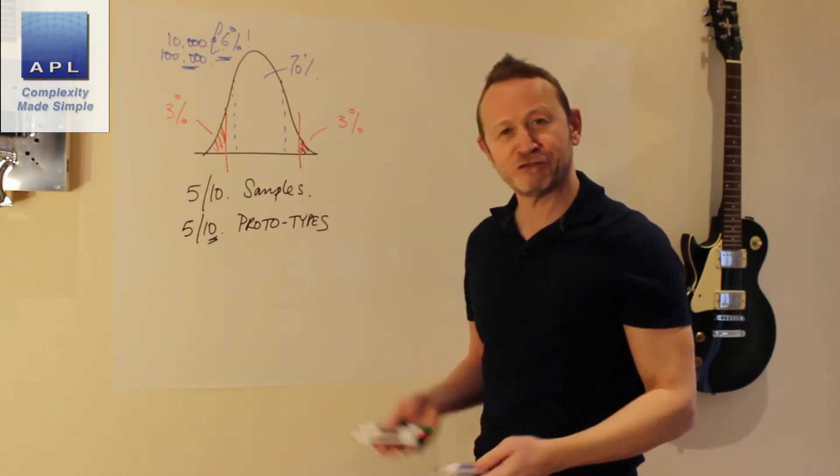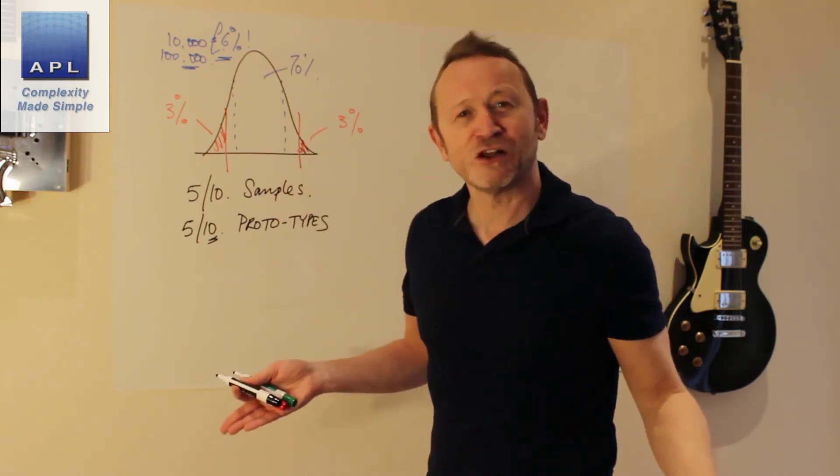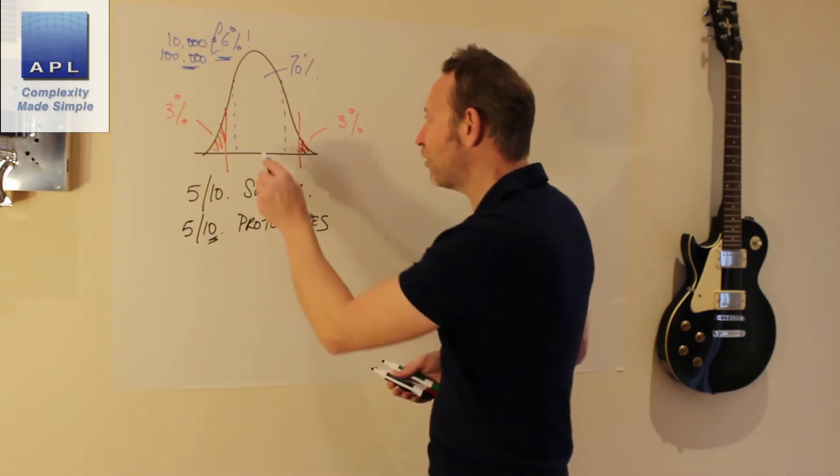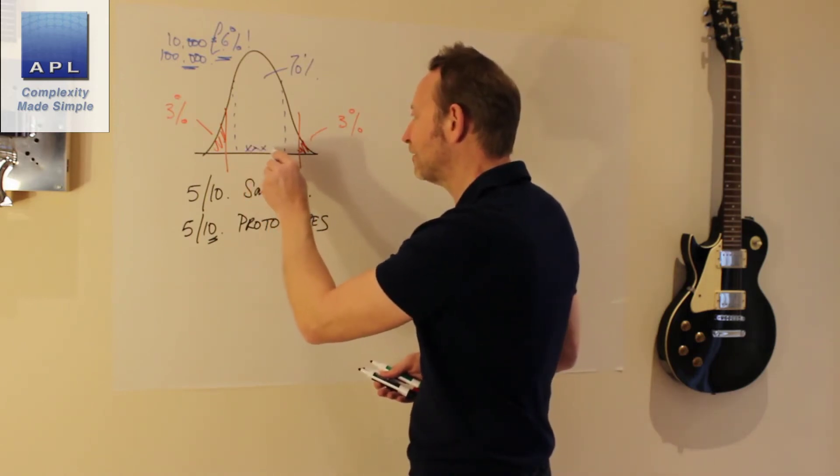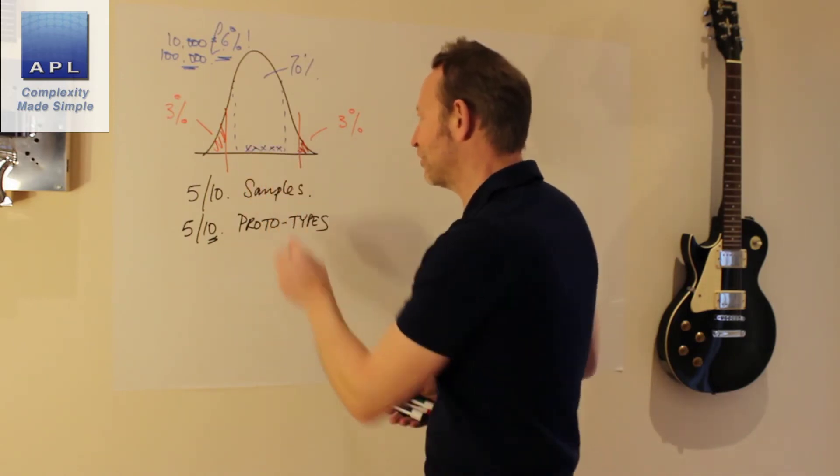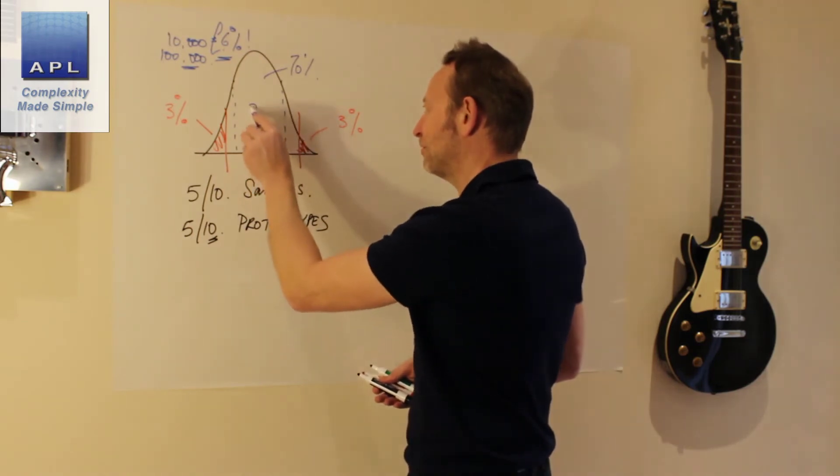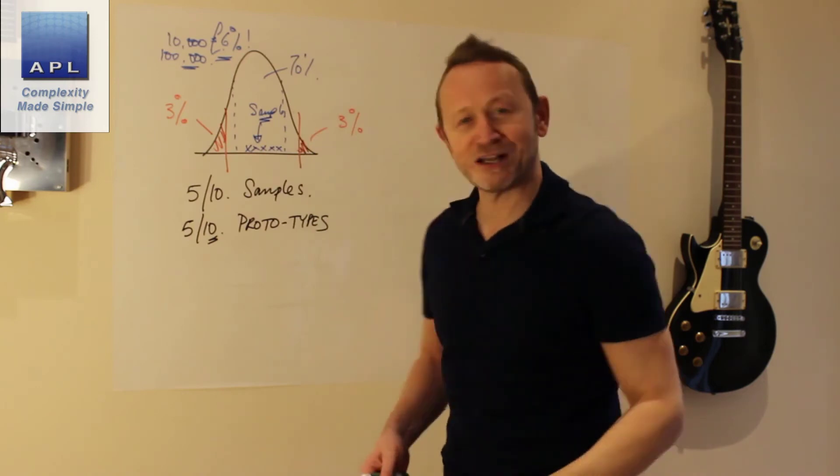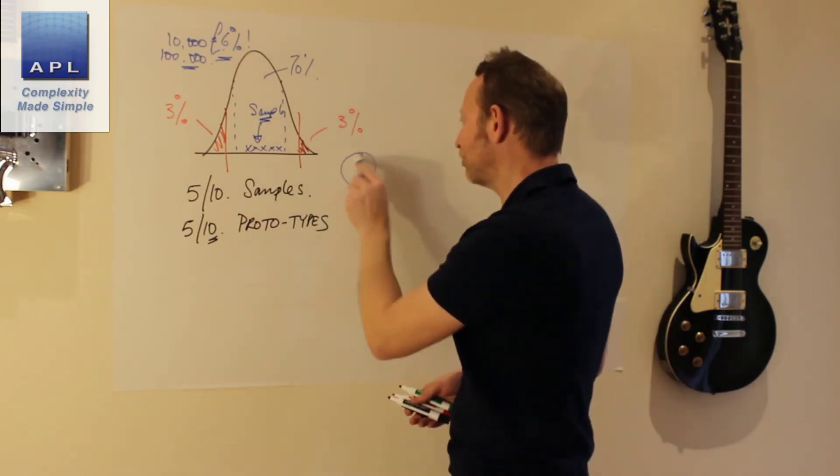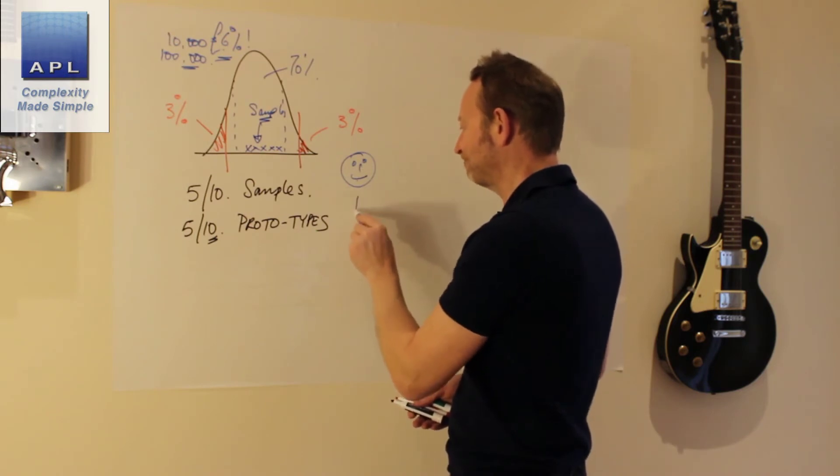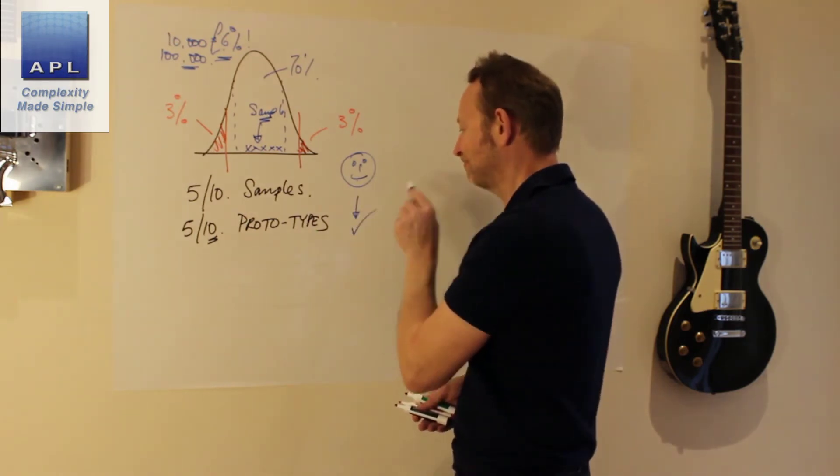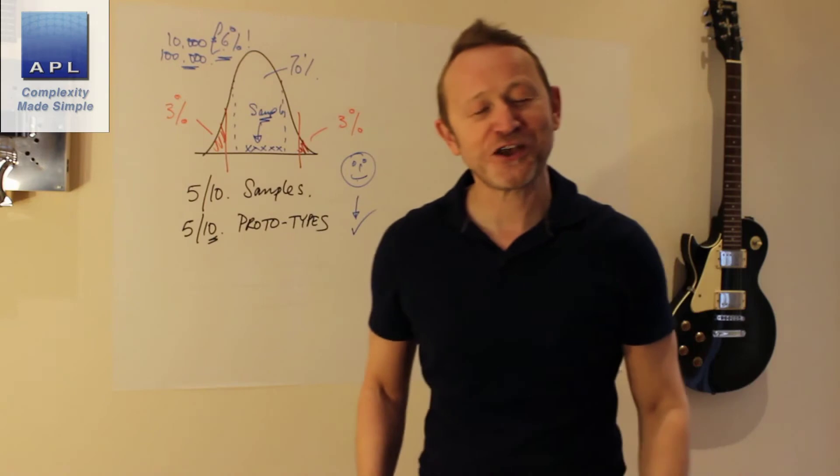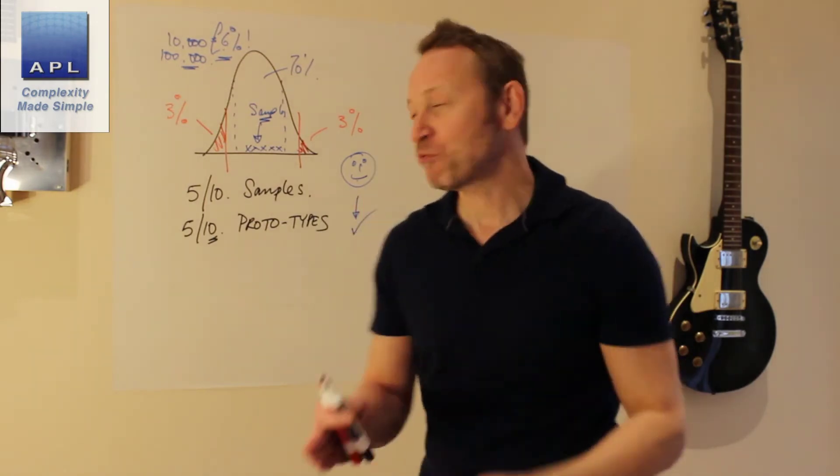Well, look, if you take 5, where are they likely to come from? Well, they're more than likely going to come from where lots of data is sitting. So here's your sample here. What does your sample tell you? Your sample tells you, yeah, everything is good to go.